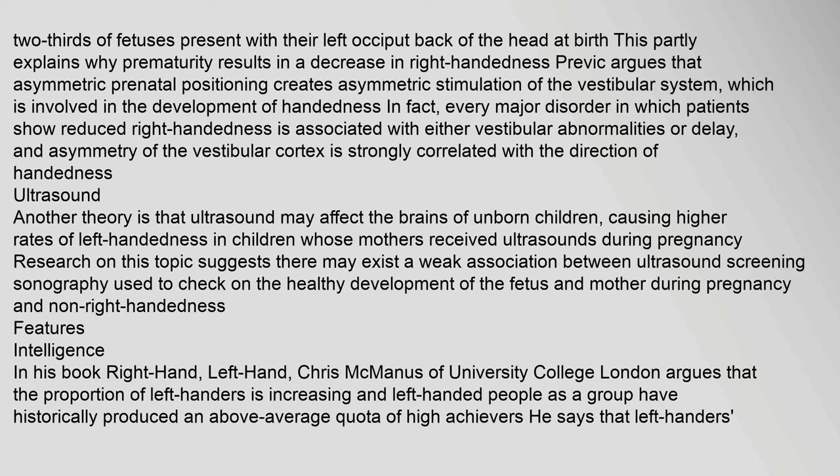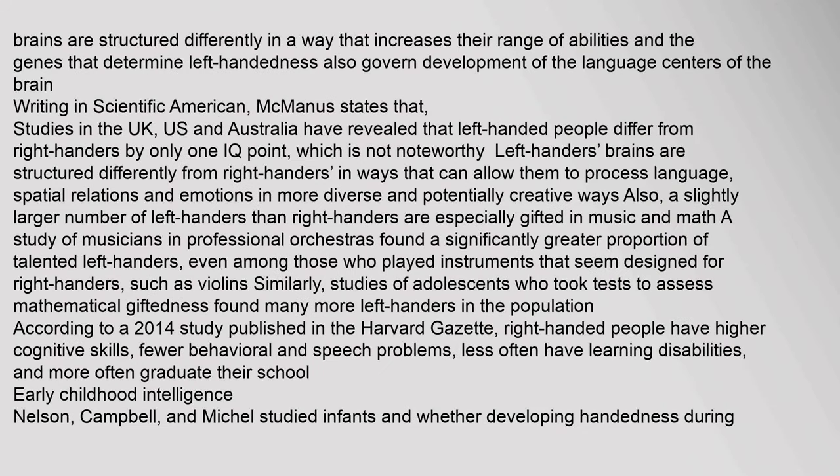Features — Intelligence: In his book Right Hand, Left Hand, Chris McManus of University College London argues that the proportion of left-handers is increasing and left-handed people as a group have historically produced an above-average quota of high achievers. He says that left-handers' brains are structured differently in a way that increases their range of abilities, and the genes that determine left-handedness also govern development of the language centers of the brain.